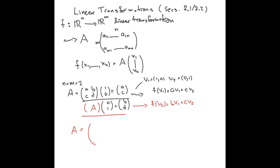So one way to think of this matrix A is the first column is the coefficients of f(v_1), which is (a, c), and the second column is (b, d), which is f(v_2).